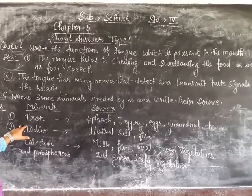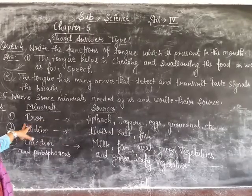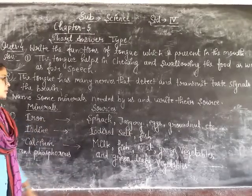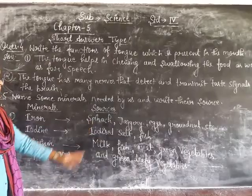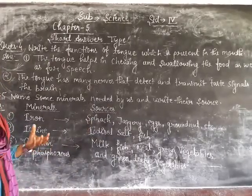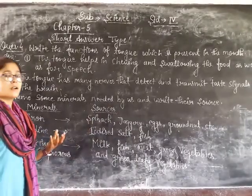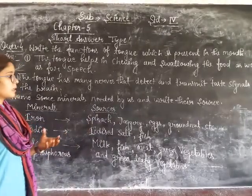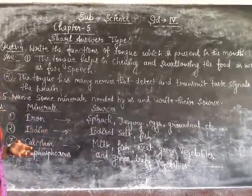First mineral: iron. The sources of iron include spinach, jaggery, legumes, and brown nuts, etc.